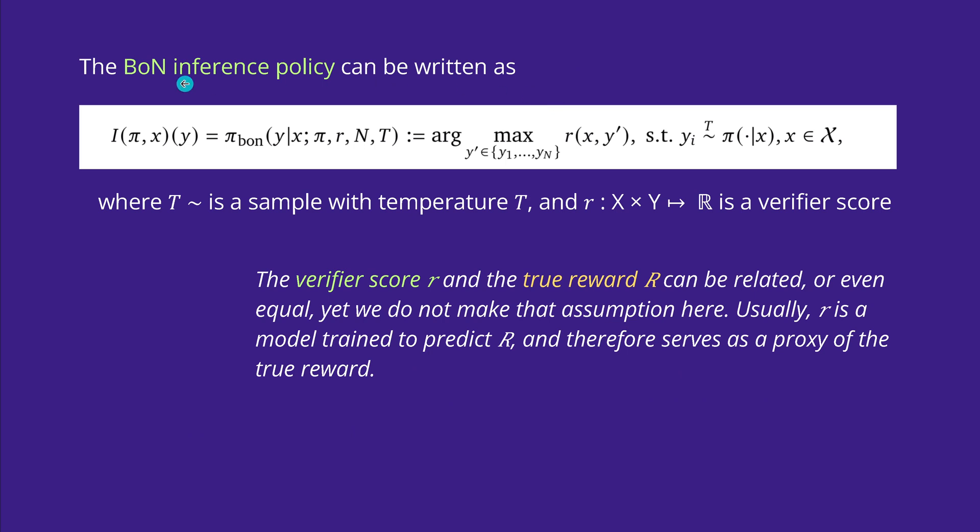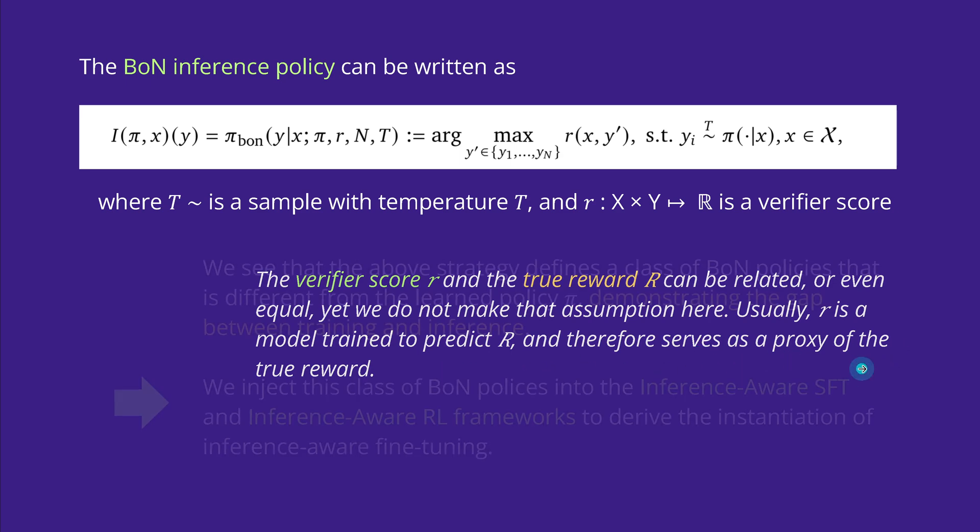The inference policy for best of N can be rewritten in this beautiful form, see my last video. Note that the verifier score r and the true reward for the reinforcement learning can be related or they can even be equal, yet at this moment in time we don't make any assumption. Normally r is a model trained to predict the real reward and therefore serves only as a proxy.